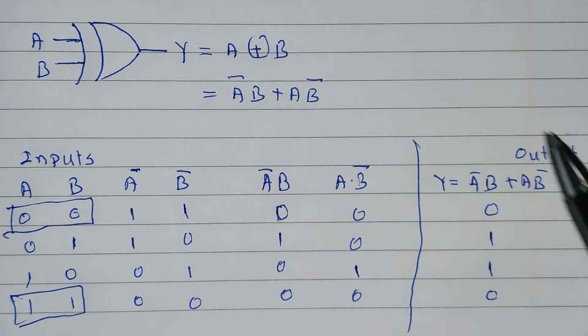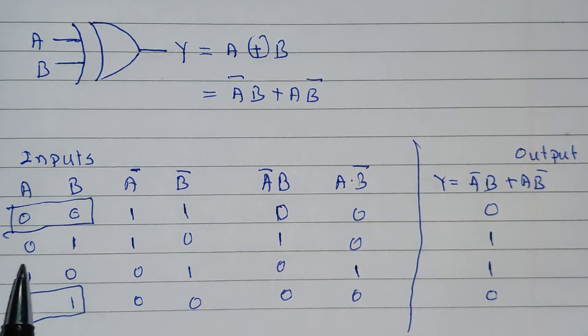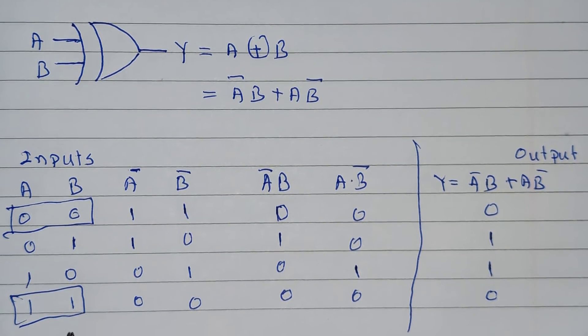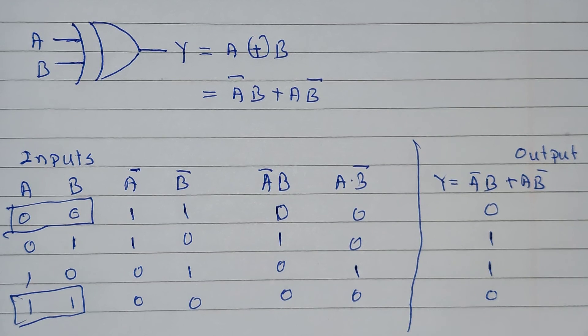It generates the output for exclusive inputs. Only if inputs are exclusive, like 0 1, at that time output will be 1. Or 1 0, at that time output will be 1. Otherwise, for same inputs, 0 0 and 1 1, output will be 0. And that's why it is called as exclusive OR gate. Thank you. To be continued. Bye-bye.